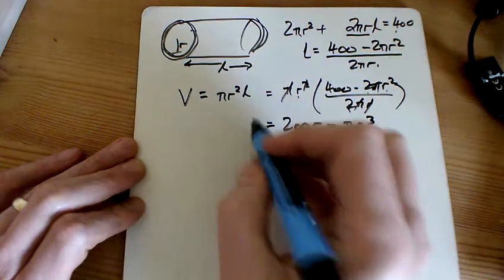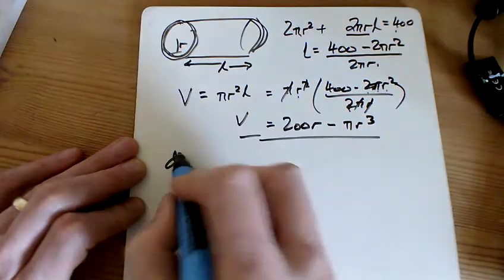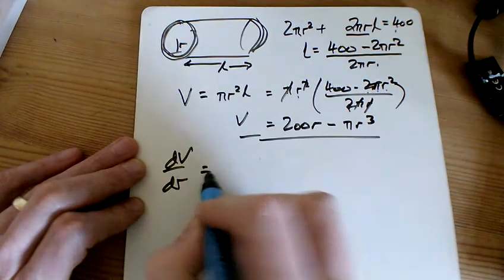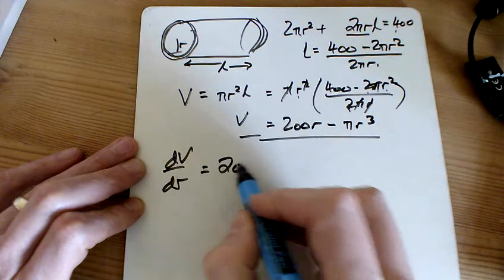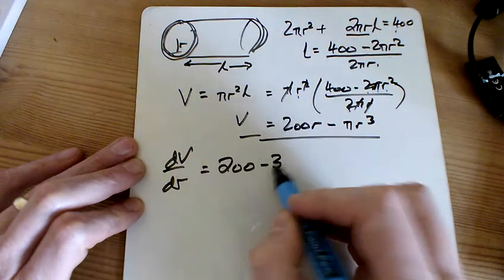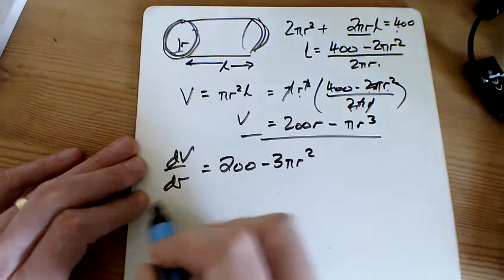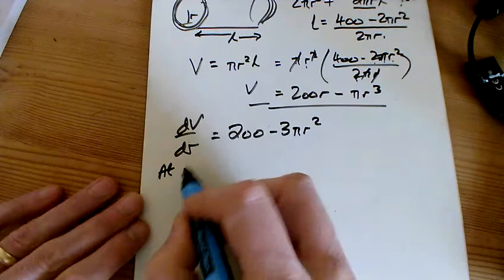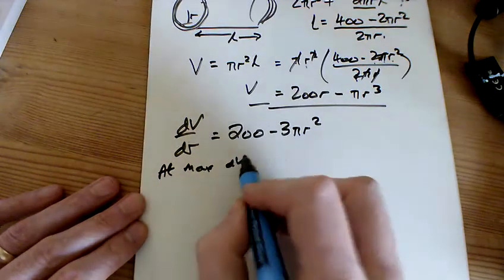What we're going to do now is differentiate it. So dV/dr is equal to 200 minus 3πR². At the maximum, this is equal to 0.